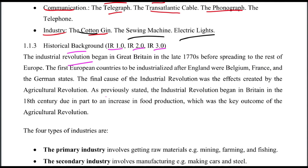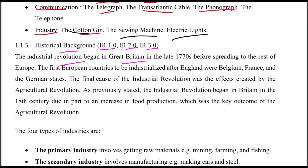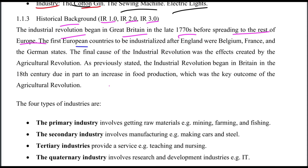The Industrial Revolution began in Great Britain in the late 1700s before spreading to the rest of Europe. The first European countries to be industrialized after England were Belgium, France, and Germany.